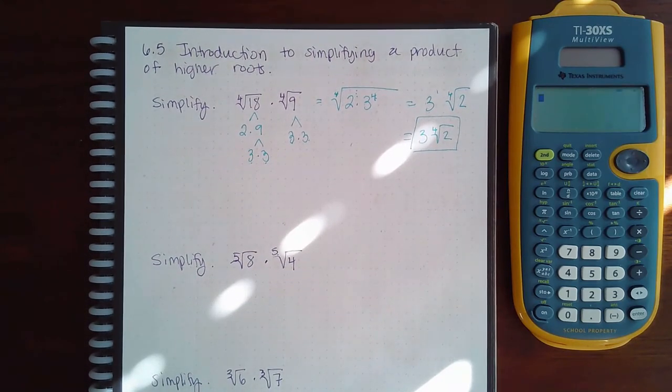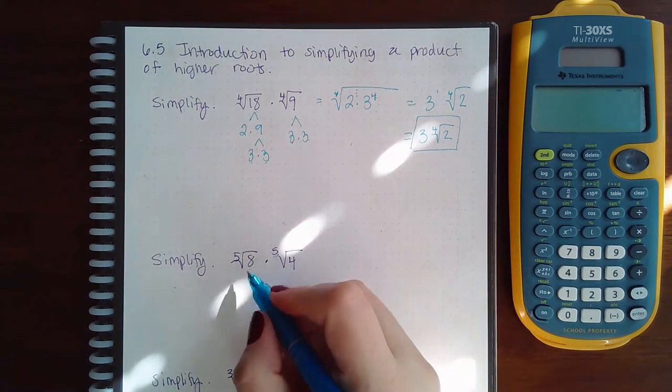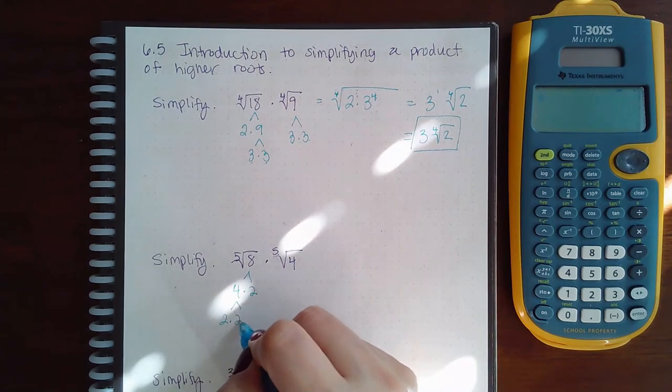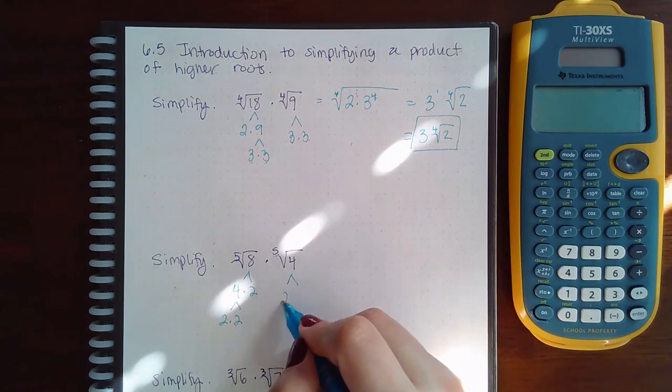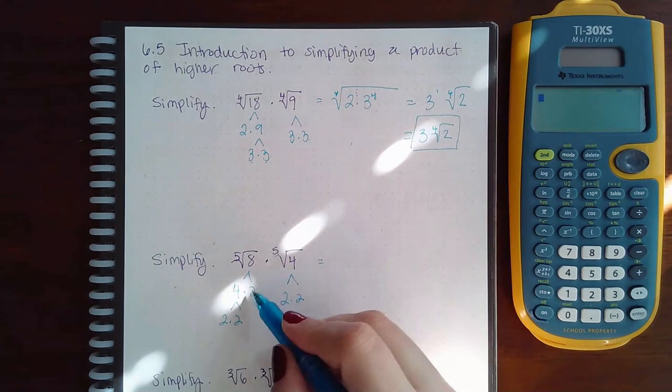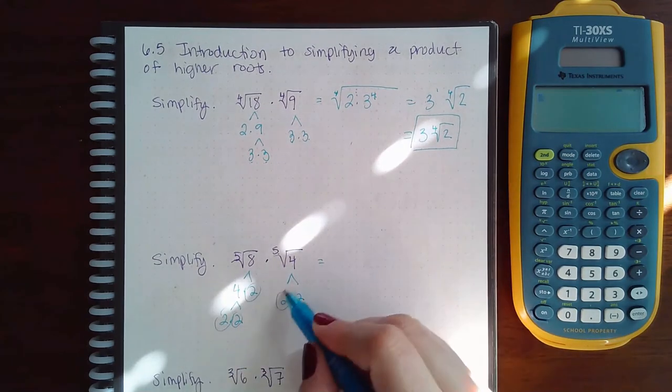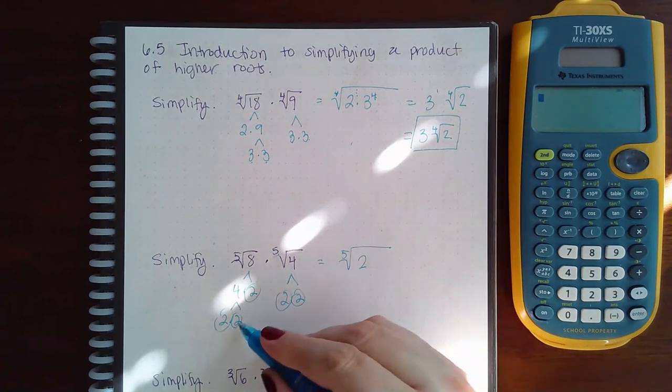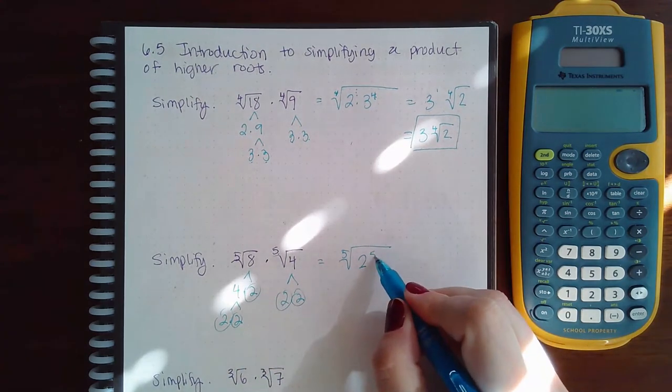So for the next example, I have 8 which is 4 times 2, which is 2 times 2. 4 over here is 2 times 2. So if I look at all the prime numbers, I end up with the 5th root of 2 to the 1, 2, 3, 4, 5.